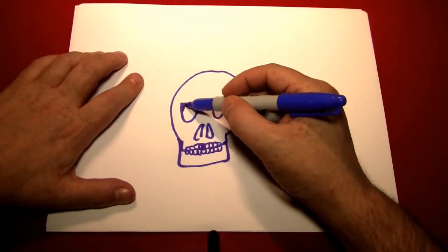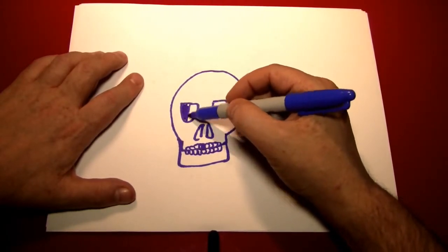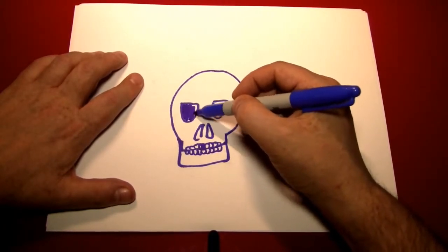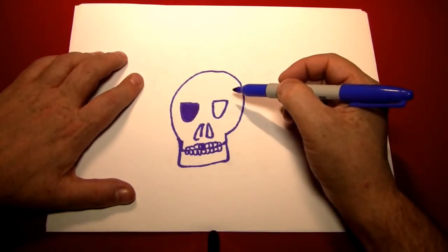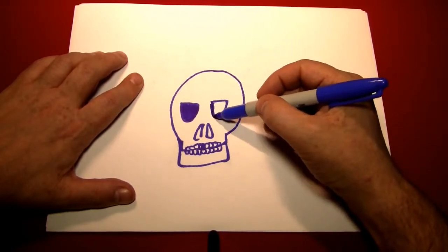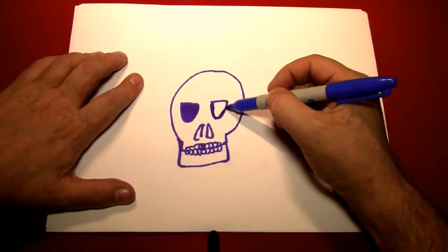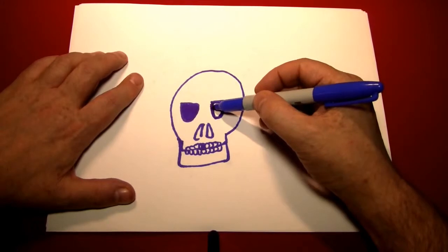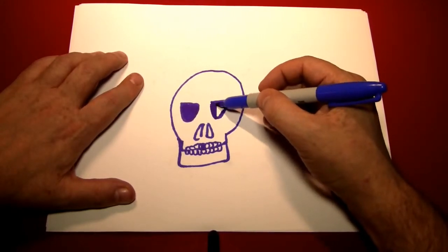We're ready to color in the eye sockets, which you should color in completely and fully, like that. To show that they are empty and hollow and no longer hiding a soul, as this is simply a skeleton.